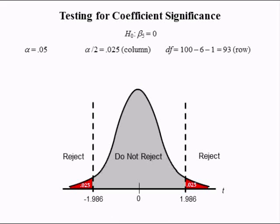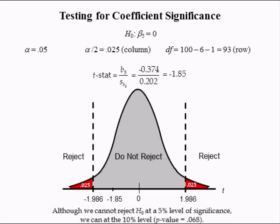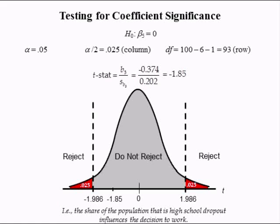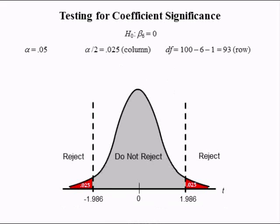The fifth individual T-test has a null hypothesis of beta 5 equal to 0. The T-stat equals negative 1.85. Although this is in the do-not-reject region, negative 1.85 is really close to the lower critical value of negative 1.986. So although we can't reject the null at the 5% level of significance, we can reject it at the 10% level because the p-value was 0.068. The share of the population that has a high school dropout is significant at the 10% level.